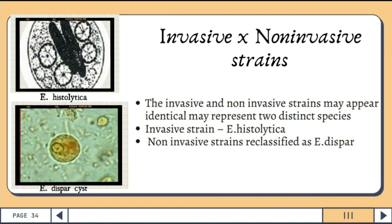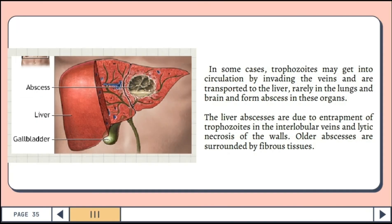An example of the invasive strain is Entamoeba histolytica, while the non-invasive strains are reclassified as Entamoeba dispar. In some cases, trophozoites may enter circulation by invading the veins and are transported to the liver, rarely to the lungs and the brain, forming abscesses in the organs. The liver abscesses are due to entrapment of trophozoites in the interlobular veins and lytic necrosis of the walls. Older abscesses are surrounded by fibrous tissues.